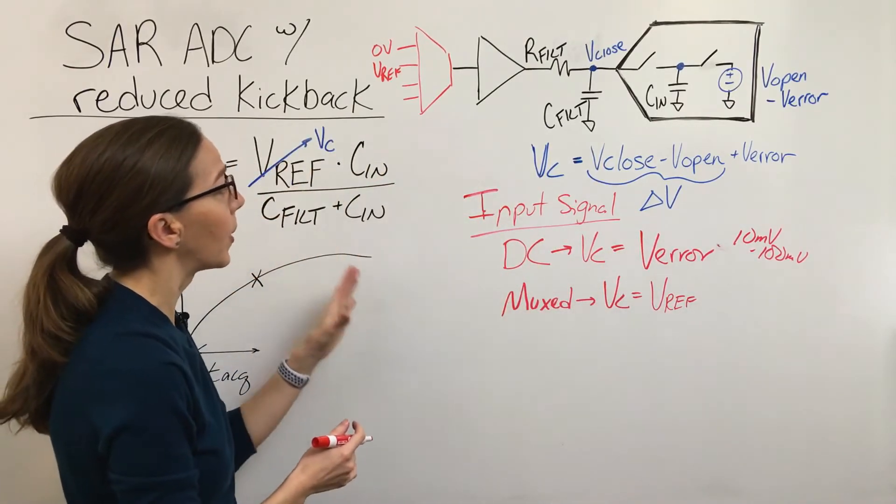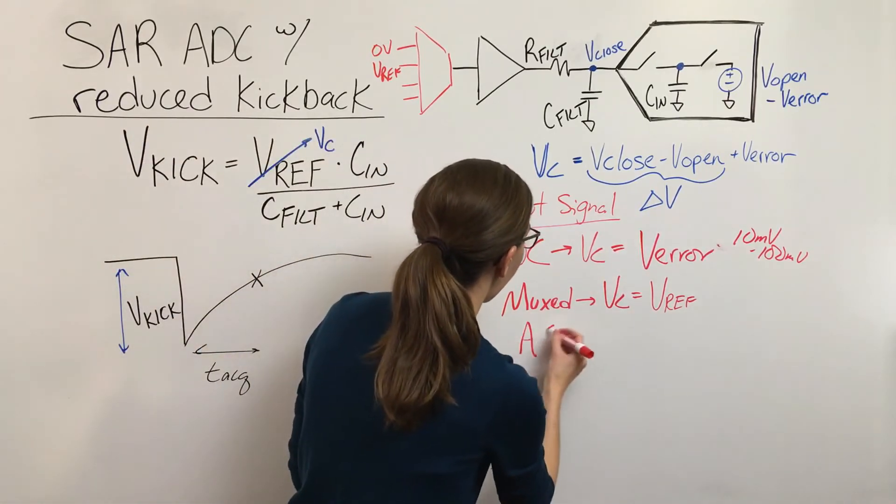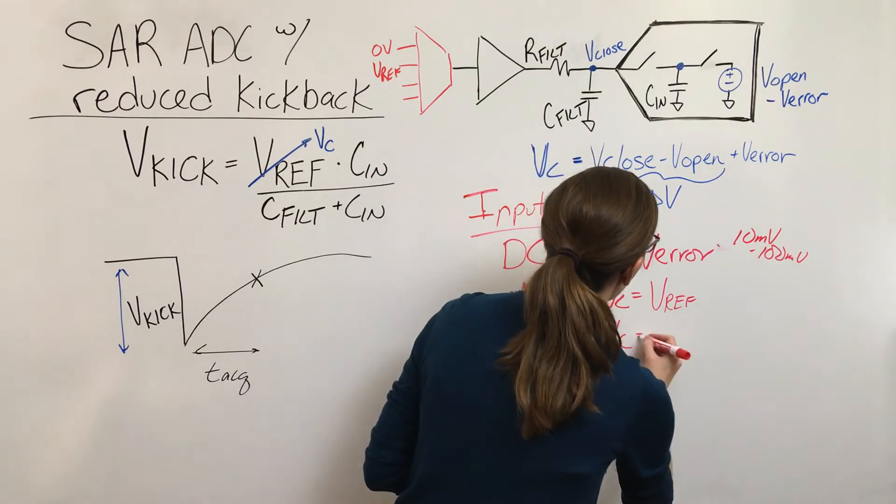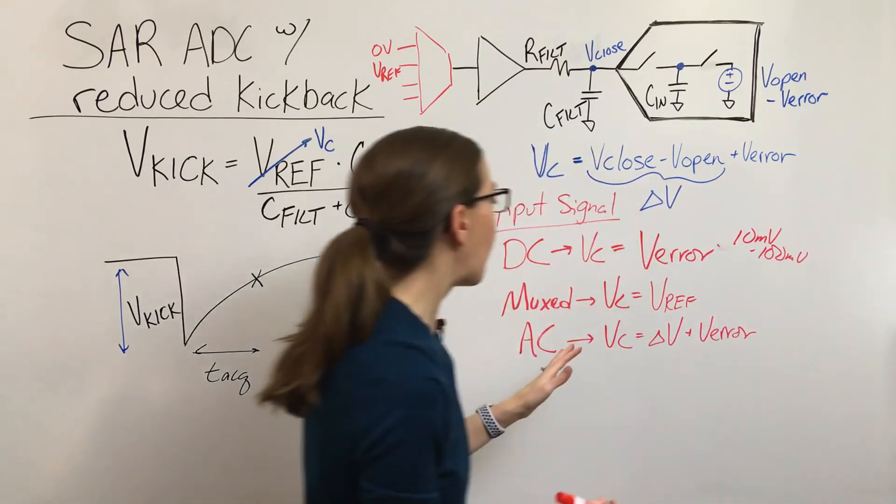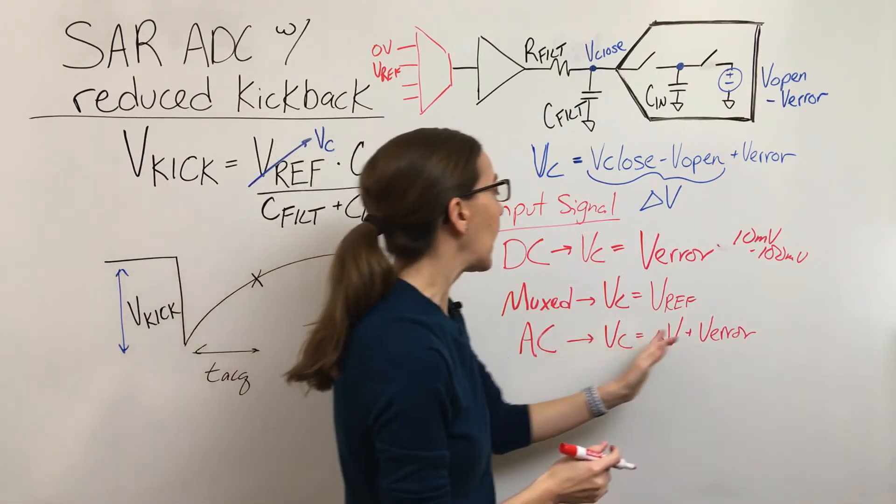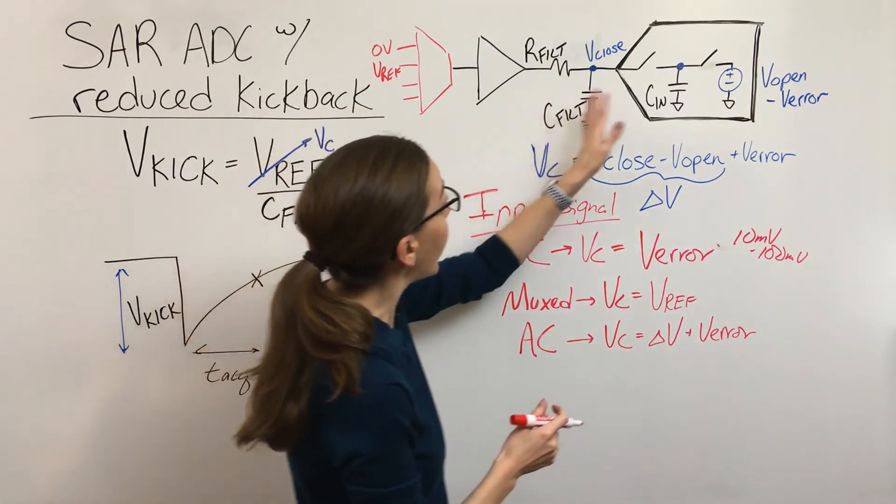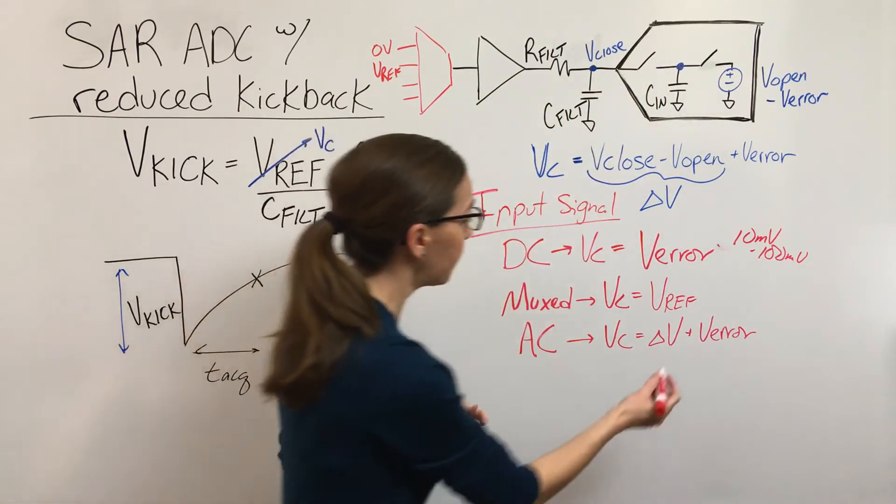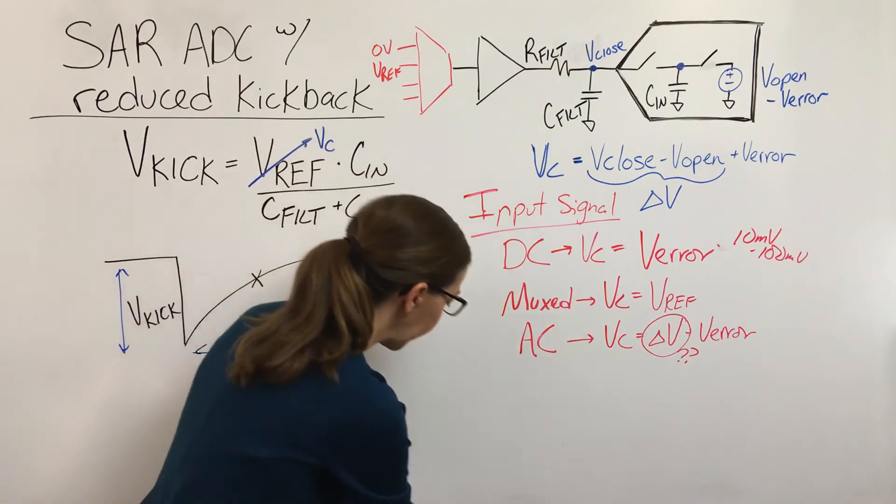So now you've got a scenario somewhere in between best case and worst case, which would be an AC signal. So here you've got to worry about both the delta V and the V error. And it's really just a matter of which one is bigger. So for low frequency inputs, it's going to be the error that's going to dominate your kickback. But as your frequency gets higher, the voltage change from when the switch opens to when it closes is going to get greater and greater. So we need to come up with a term for this delta V in the case of an AC signal.